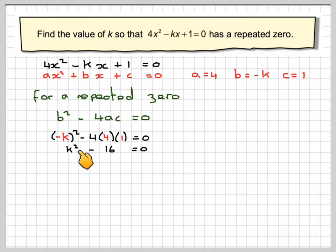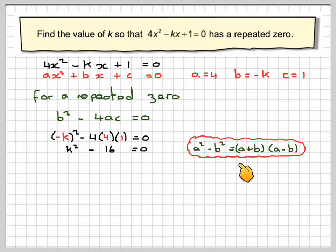This is known as the difference of two squares and can be factorized using a squared minus b squared equals a plus b, a minus b. So a will be k and b will be 4, so k plus 4, k minus 4 equals 0.